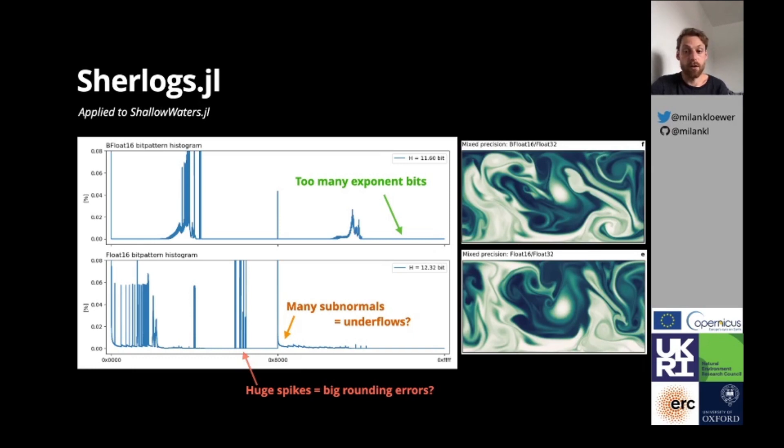The huge spikes may suggest recurrent rounding errors, but could also arise from recurrent calculations with variables that are actually constant. Is there a way that we can understand how and where they are caused? Yes, there is.